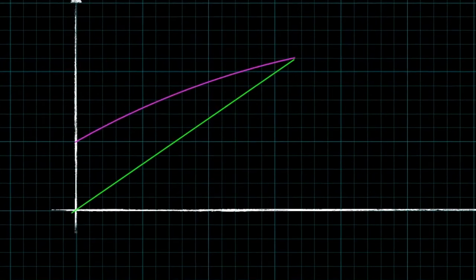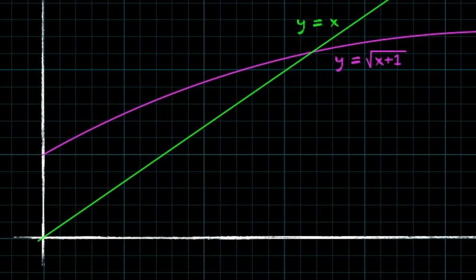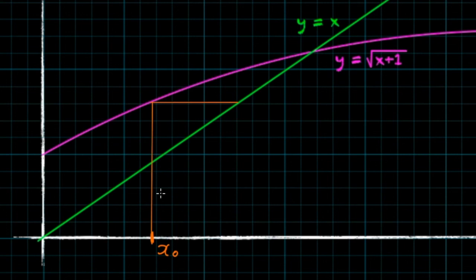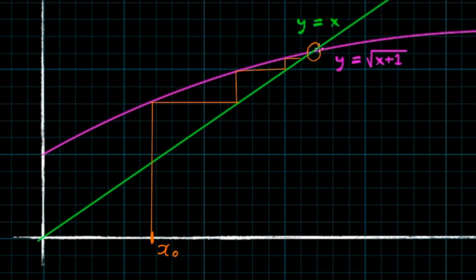Let's now look at the last iteration: x = √(x + 1). Let's choose a value for x₀ and draw a vertical line from x₀ to the curve, then a horizontal line from the curve to the green line. Notice: all vertical lines go to the curve, all horizontal lines go to y = x. Repeating this process, to the curve, to the line, to the curve, to the line — we're going to get convergence. But rather than oscillating left and right of the root, we're approaching it from the left, with each value of x getting gradually bigger.